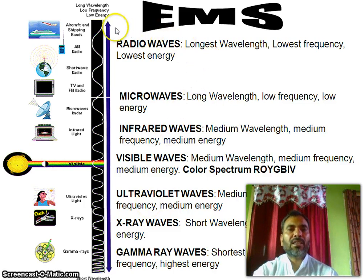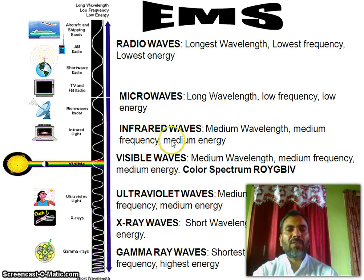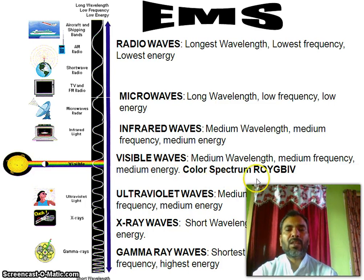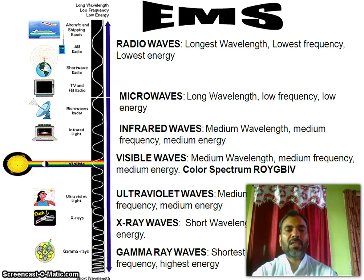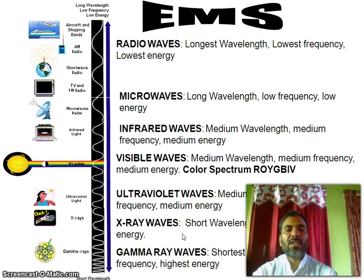For the electromagnetic spectrum: radio waves have the longest wavelength, lowest frequency, and lowest energy. Microwaves have long wavelength, low frequency, low energy. Infrared waves have medium wavelength, medium frequency, medium energy. Visible waves have medium wavelength, medium frequency, medium energy. X-ray waves have short wavelength, high frequency, and high energy. Gamma rays have the shortest wavelength, highest frequency, and highest energy. So from radio to gamma rays, wavelength decreases and energy increases.